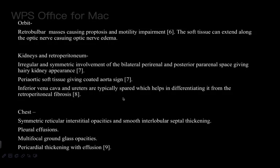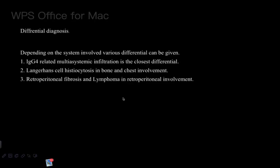In the chest, symmetric reticular interstitial opacities, smooth interlobular septal thickening, pleural effusions, multifocal ground-glass opacities, and pericardial thickening with effusion may be seen. Differential diagnoses include, depending on the system involved: IgG4-related multisystemic infiltration, which is the closest differential; Langerhans cell histiocytosis in bone and chest involvement; and retroperitoneal fibrosis and lymphoma in the retroperitoneal compartment.